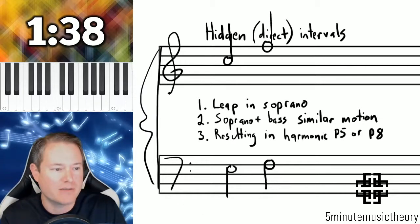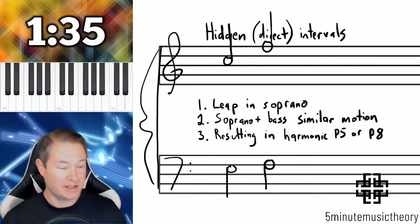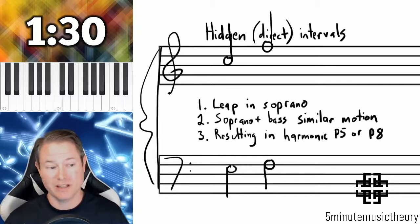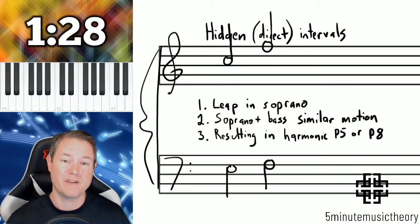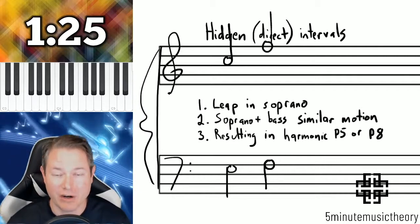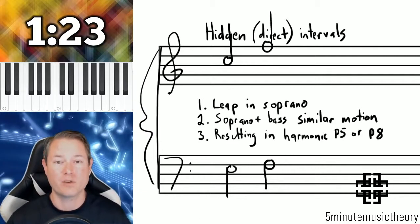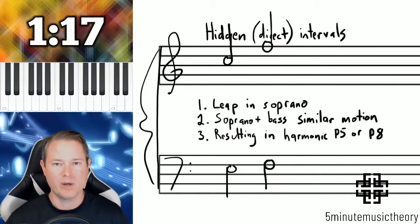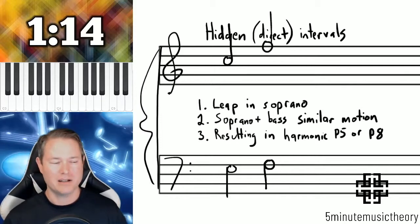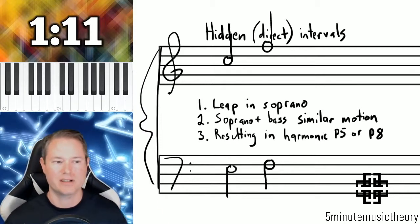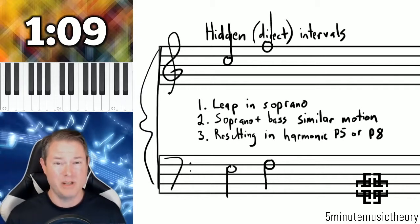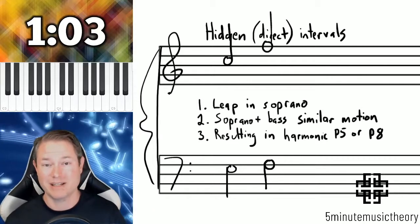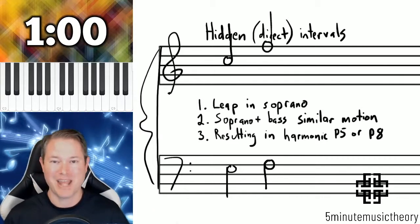Just a quick summarization here of hidden or direct intervals — it's these three criteria which are on the screen: there needs to be a leap in the soprano, the soprano and bass moving in similar motion, resulting in a harmonic perfect fifth or perfect octave. And remember, this is considered an error — it's the same effect as forbidden parallels, just hidden in the texture and a little bit harder to see. When you're doing error detection, you don't have to worry about any of the chords unless there's a leap in the soprano — that first criterion must be met. But when you're part writing, be really careful about this, especially when writing your melody line with these leaps. That's why it's best to try to keep things as stepwise as you can.